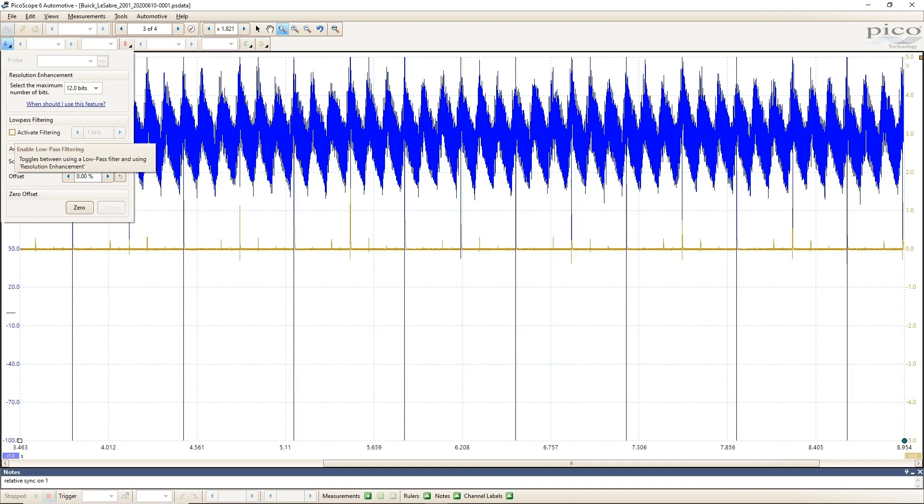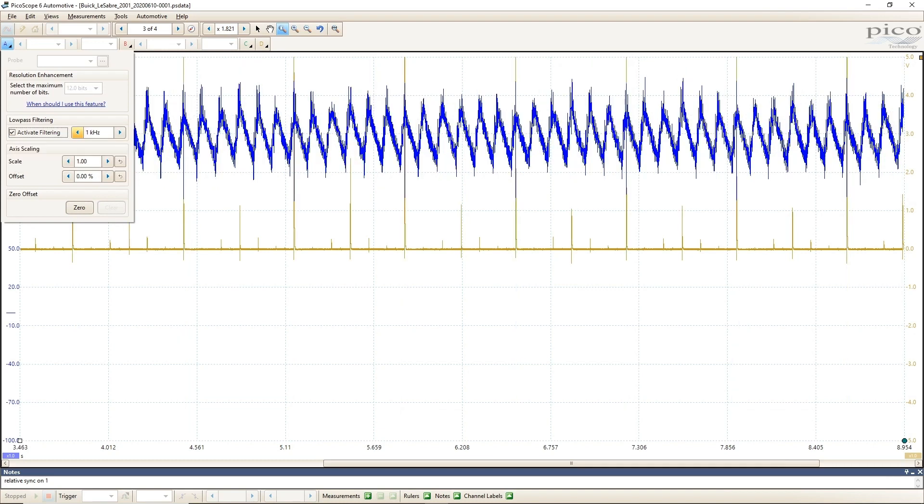Let's look at that noisy relative compression capture again with no filtering. To apply a filter on Pico, select the channel you want to filter, and then click the box that says active filtering. Beside this box, you will see the default value of 1 kHz. This is a pretty good default value, and you usually won't need to adjust it, but you can if you are filtering high frequency or very low frequency signals. Lowering this number will give you more filtering, and raising it will give you less filtering.